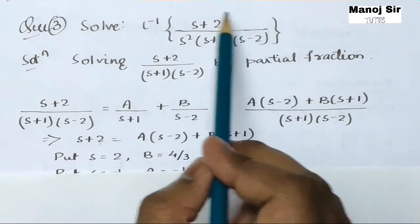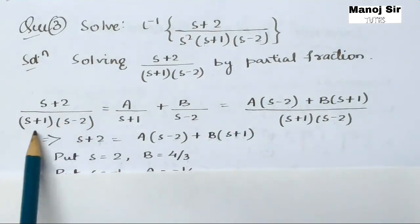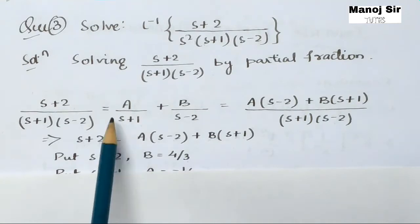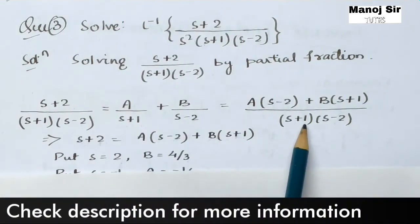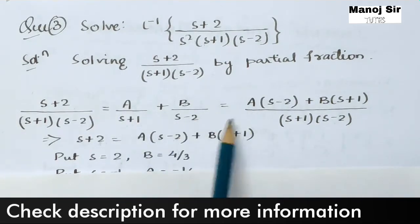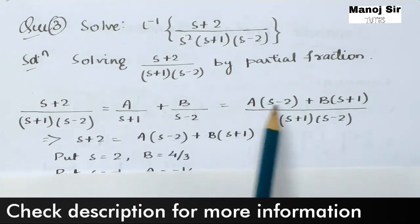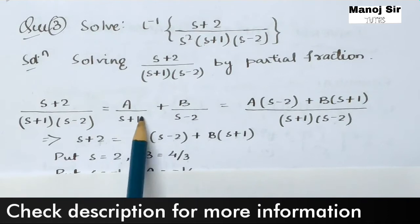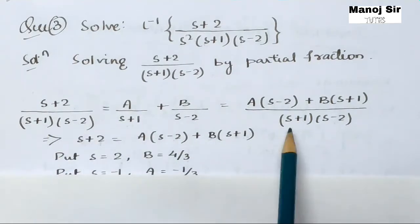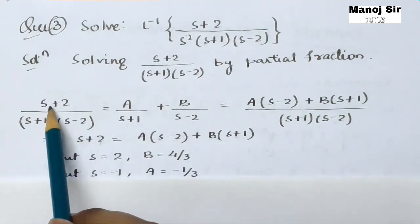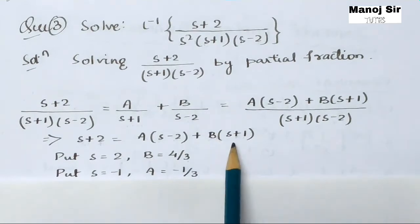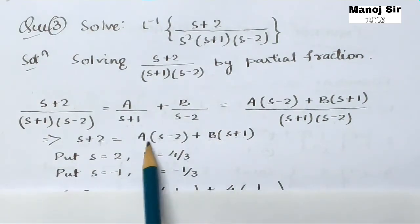Solving by partial fraction technique: (s+2) / [(s+1)(s-2)] = A/(s+1) + B/(s-2). Taking LCM, with A we multiply (s-2) and with B we multiply (s+1). Comparing and cancelling the denominator, we get: s+2 = A·(s-2) + B·(s+1). We now need to find the values of A and B.